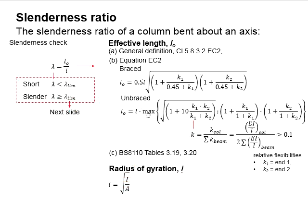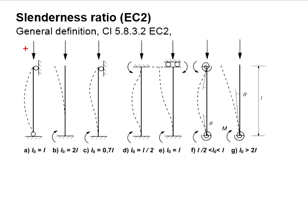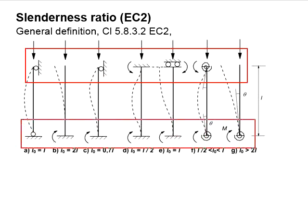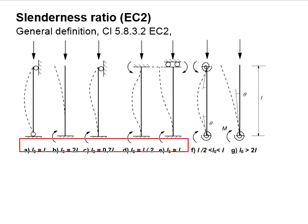As for the effective length, there are three methods to determine the effective length. Eurocode in clause 5.8.3.2 gave a general definition of the effective length. Depending on the end conditions, the effective length varies. It is graphically represented in the Eurocode.